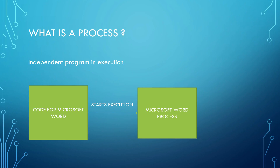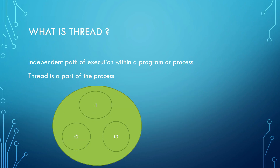So this is what a process is. Then, what is a thread? A thread can be called as an independent path of execution within a program or a process. A thread can be called as a part of a process. Suppose you have a huge process and there are various sub-tasks in that process which can be called threads. For example, consider the Microsoft Word application — when you type some text, at the same time the spell check is running as well as the autocorrect is running. So the spell check can be called as a thread and the autocorrect can also be called as a thread.